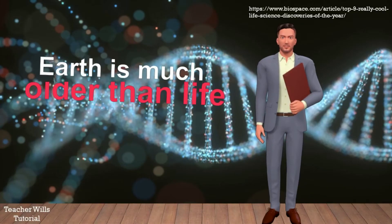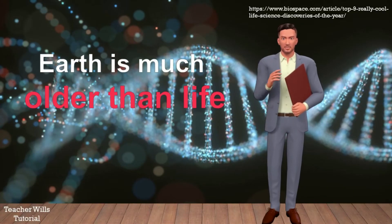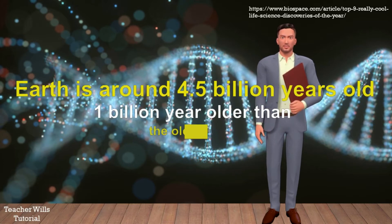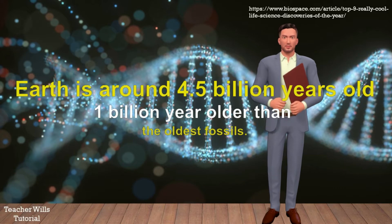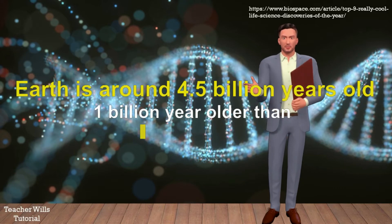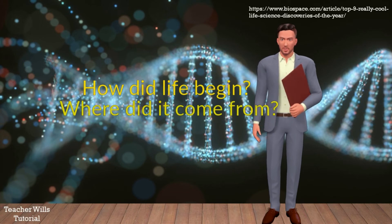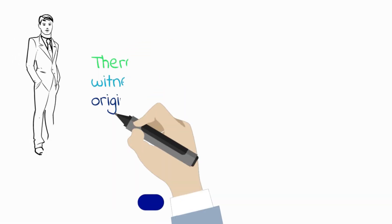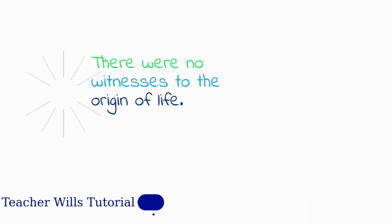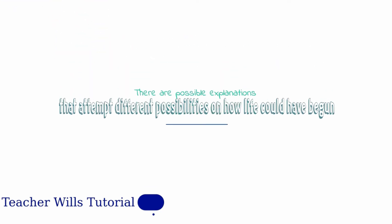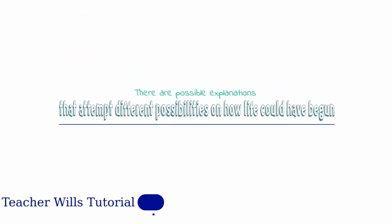Earth is much older than life. Based on radioactive decay studies of rocks, it was revealed that Earth is around 4.5 billion years old — one billion years older than the oldest fossils. So how did life begin? Where did it come from? There were no witnesses to the origin of life; however, there are possible explanations that attempt different possibilities on how life could have begun, both within science and outside the realm of science.